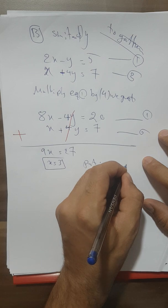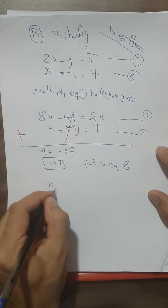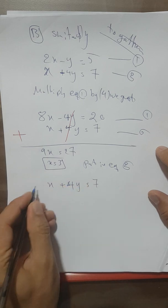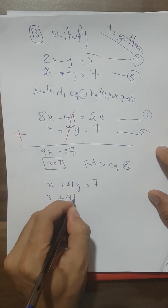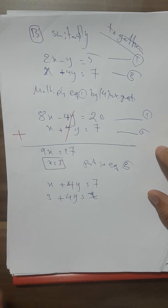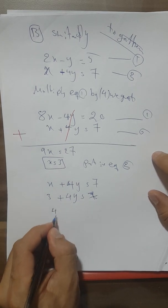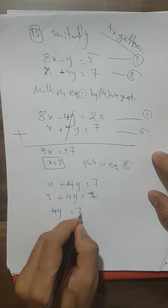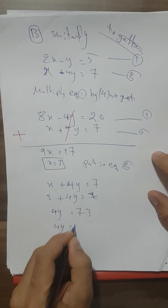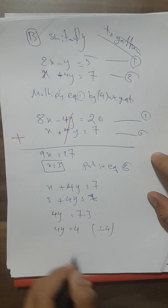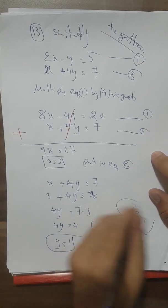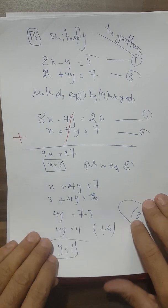Substituting x equals 3 into equation 2: 3 plus 4y equals 7, so 4y equals 4, and dividing both sides by 4 gives y equals 1. The solution is x equals 3 and y equals 1.